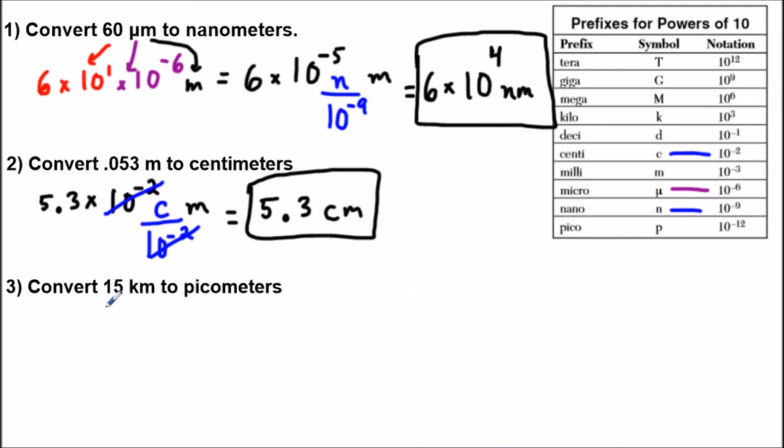Now for the next question, I'm going to convert 15 to 1.5 times 10 to the first. We're writing it in scientific notation. And now we have kilometers, so I'm going to convert k. k corresponds to 10 to the third power, so I'm going to write times 10 to the third power. And the meters is just going to carry over here. So we have meters.